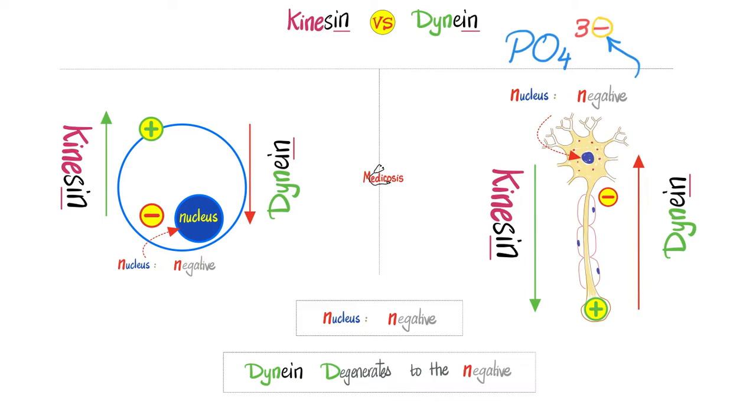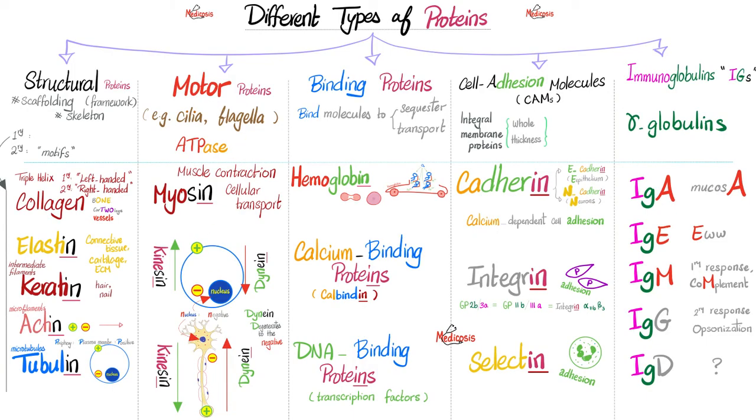So now I gave you two mnemonics. Kinesin, keep it positive. Dynein, degenerate to the negative. But please, for your sake, do not memorize two mnemonics. Just memorize one and then the other one is the other one. If you try to memorize both mnemonics, odds are you will mix them up on the exam. So personally, I just memorized one. Kinesin, keep it to the positive.